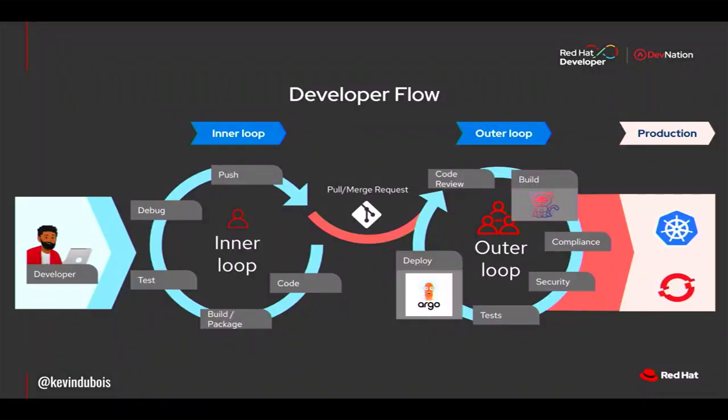If you look at the developer flow, a lot was happening in the inner loop in terms of improvements for development. In the inner loop you do your coding, building, packaging, some debugging, maybe some testing on your local machine. Then you push your code to a repository and create some sort of pull or merge request depending on what tool you're using.